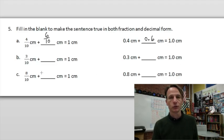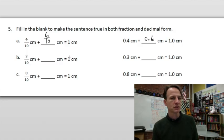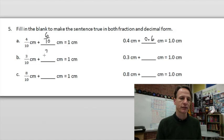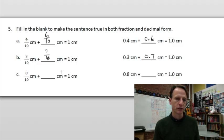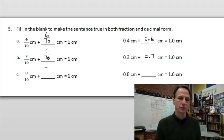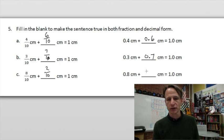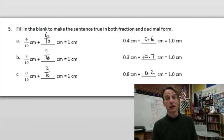Cruising through the rest: three tenths and what makes one? Seven tenths — write it as 0.7 in decimal form. Eight tenths and what makes one hole? Two tenths — write in decimal form: 0.8 and 0.2 makes one whole. That's it!